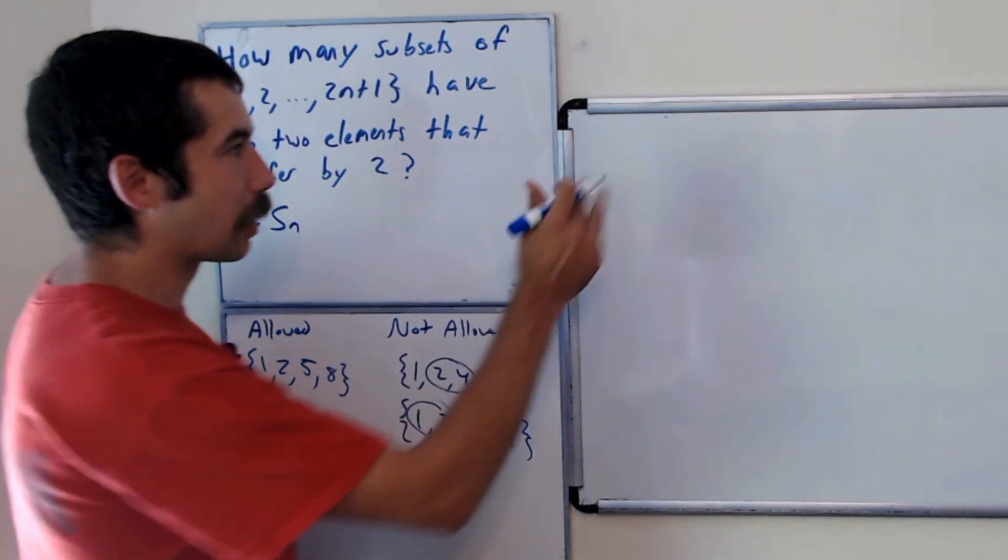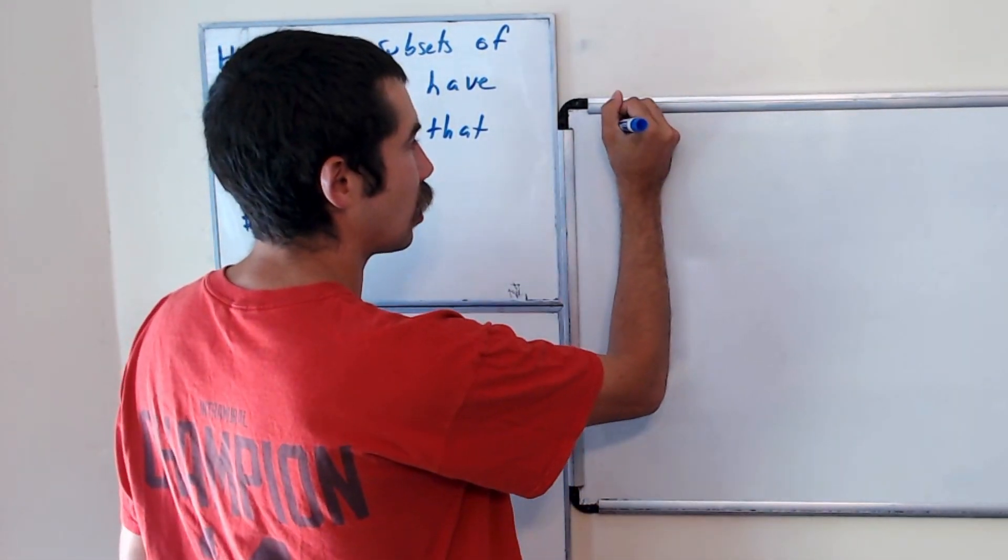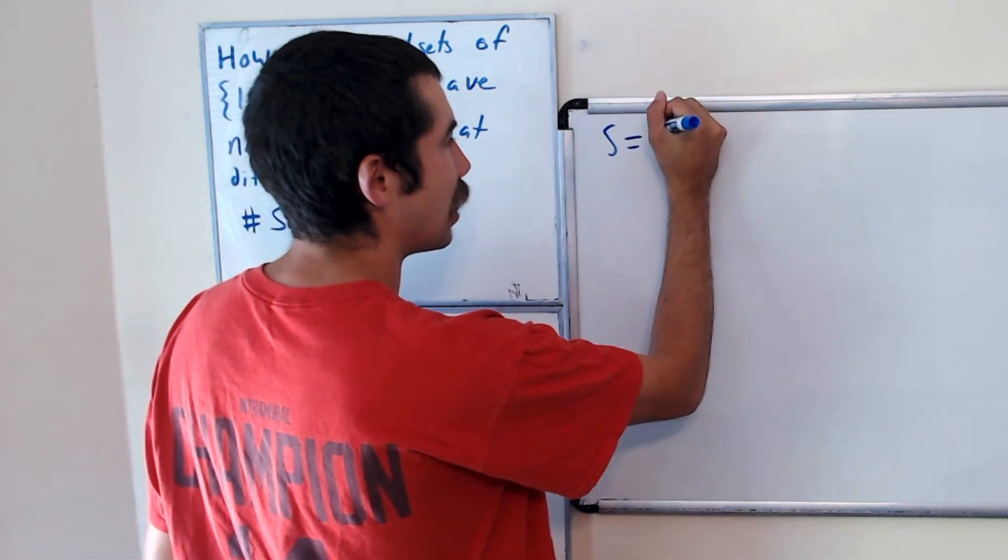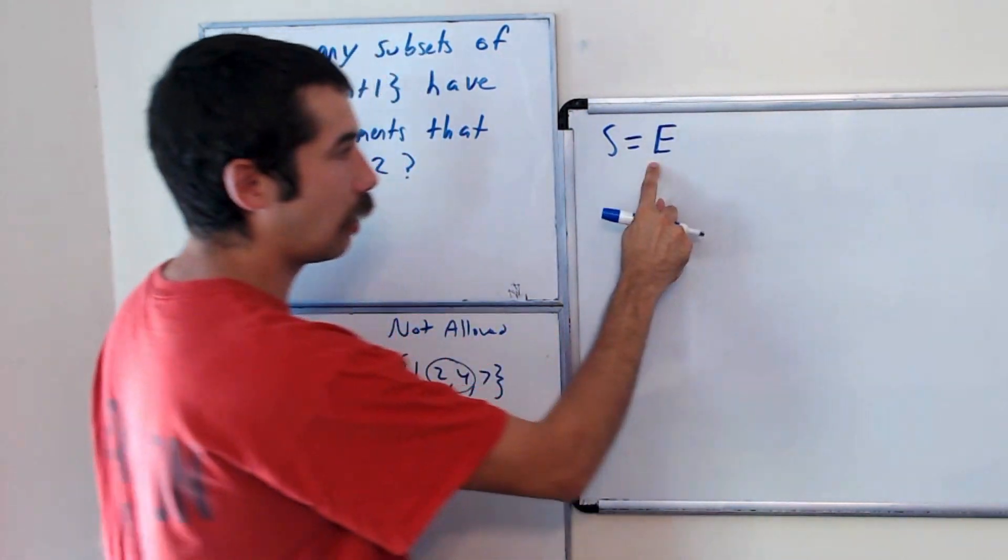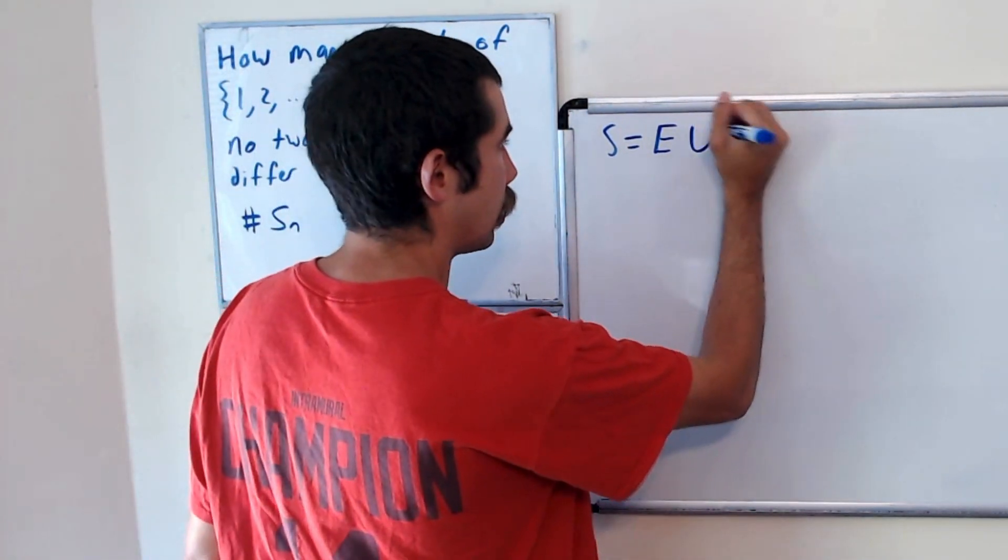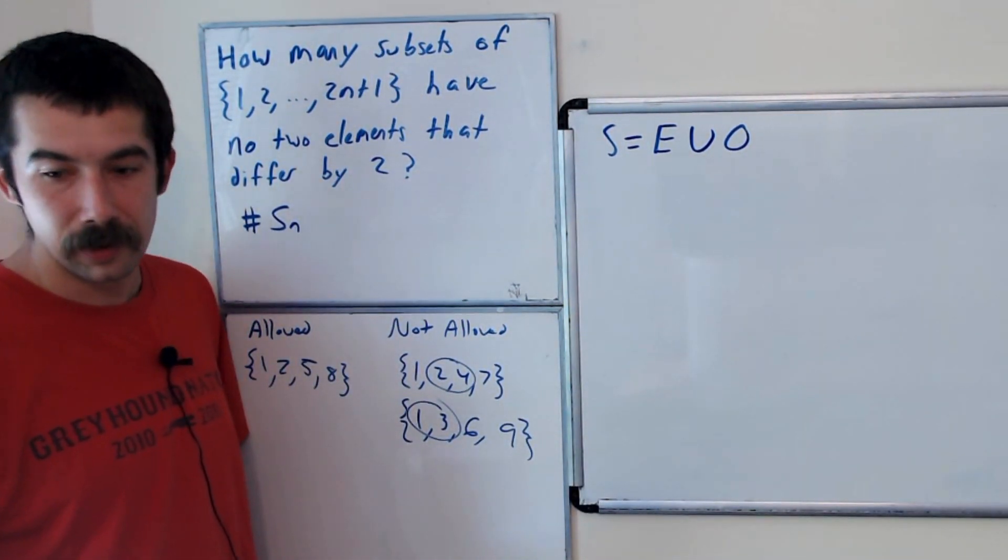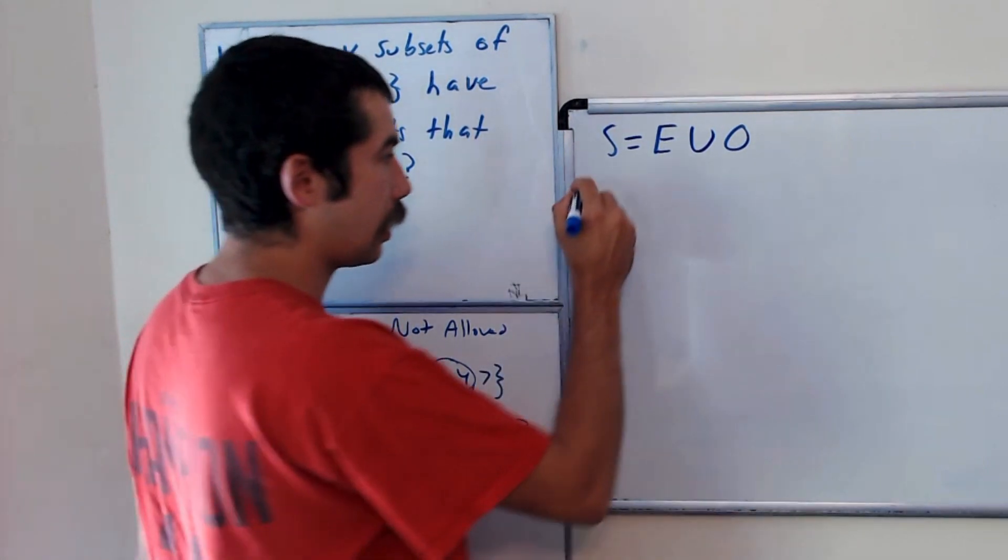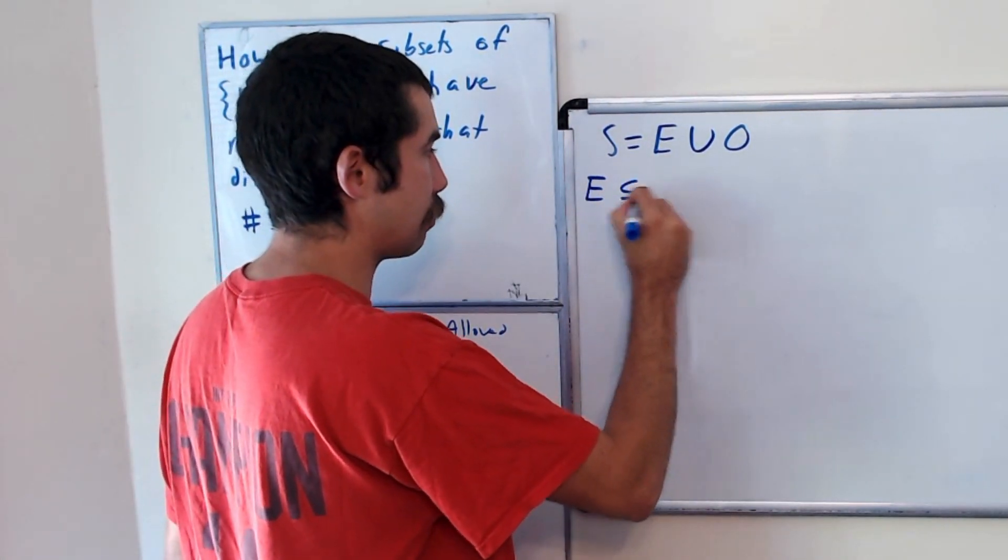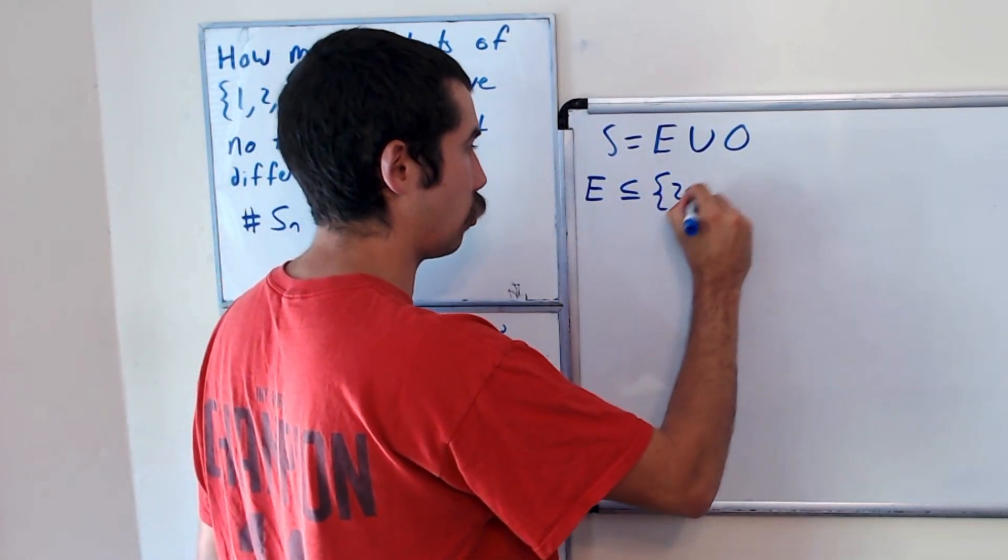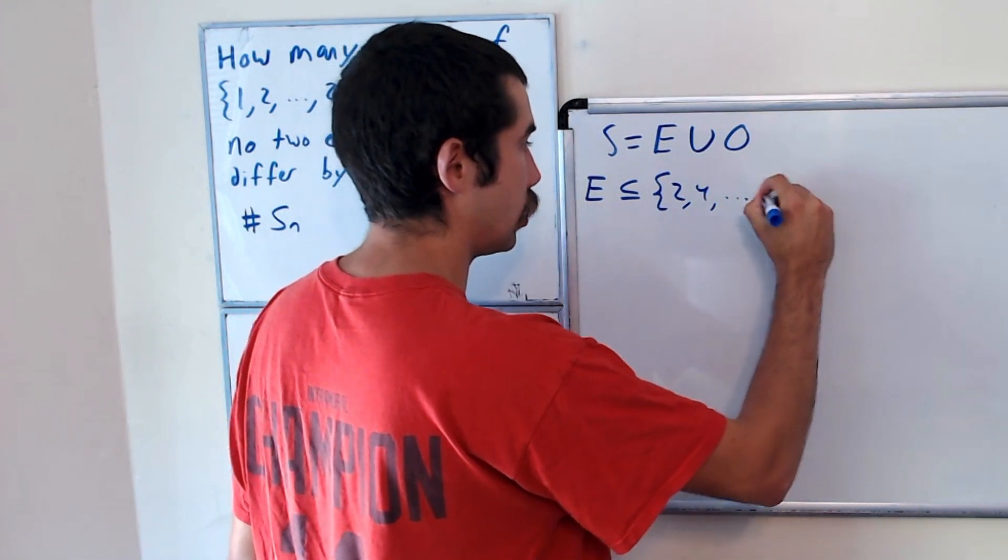Okay, so what we're going to do is we're going to take all of our sets, let's call them S, and we're going to write them as the union of the even numbers, union with the odd numbers. And here E is a subset of the numbers 2, 4, up to 2N.